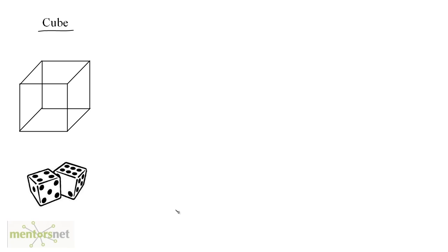The best example of a cube I can give is a pair of dice. A cube is a closed figure with 6 faces — that's why in a die you can only have at max 6 points. Each side of a face is of the same length. So let's say the side of this cube is s units long: the length will be s, the breadth will be s, and the height will also be s.